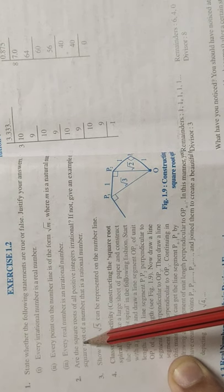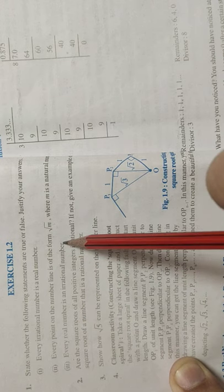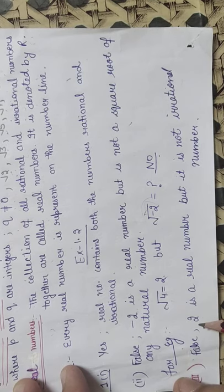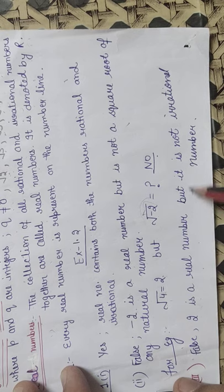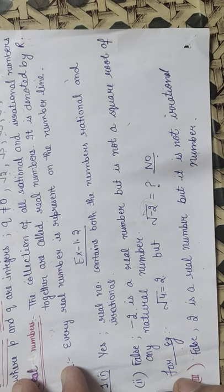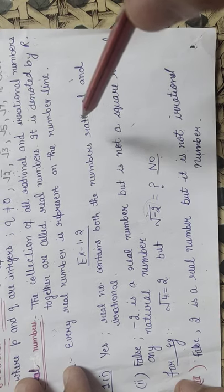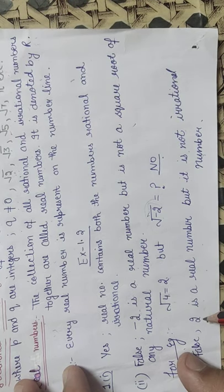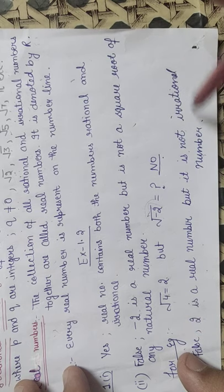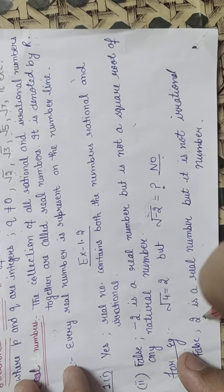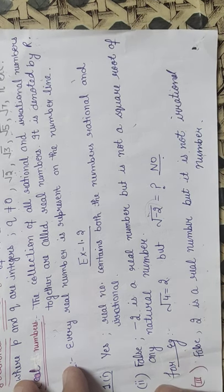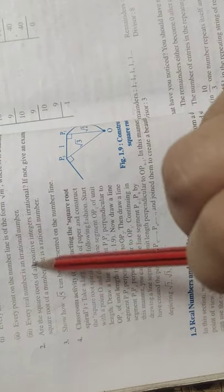Next: every real number is an irrational number. This statement is false. For example, 2 is a real number but it is not an irrational number. Irrational numbers are of the form √2, √3, √5, etc. But 2 can be written in the form of p/q, so it is not an irrational number. Therefore, every real number is not an irrational number.